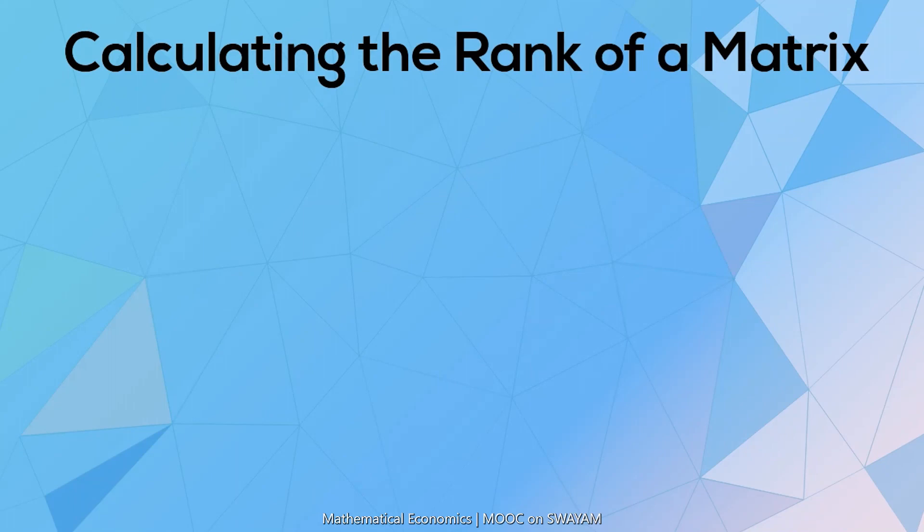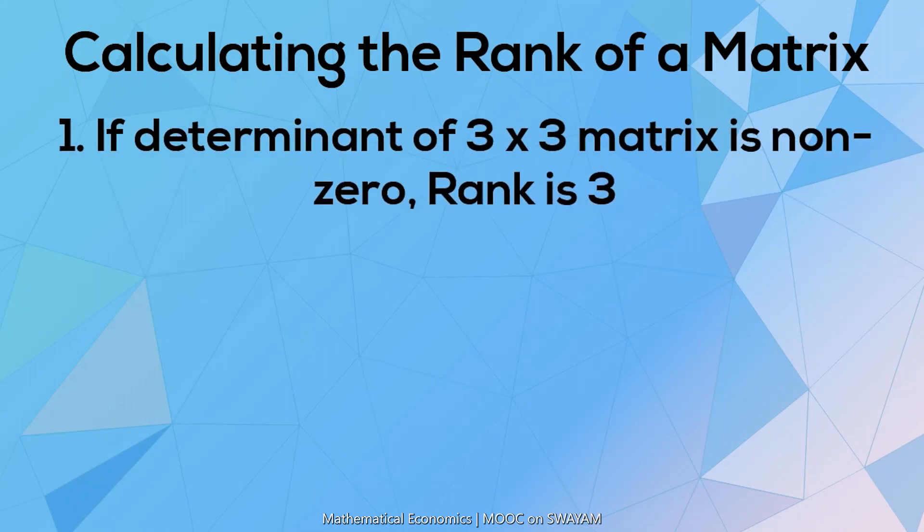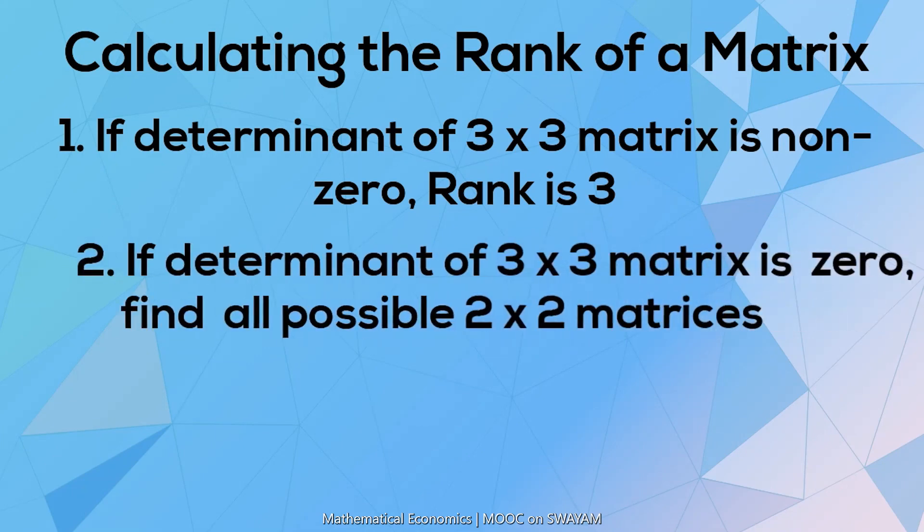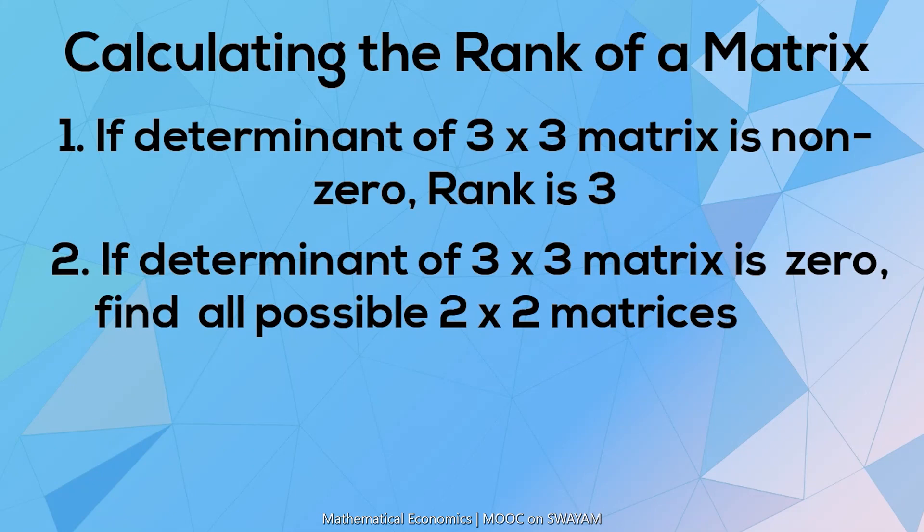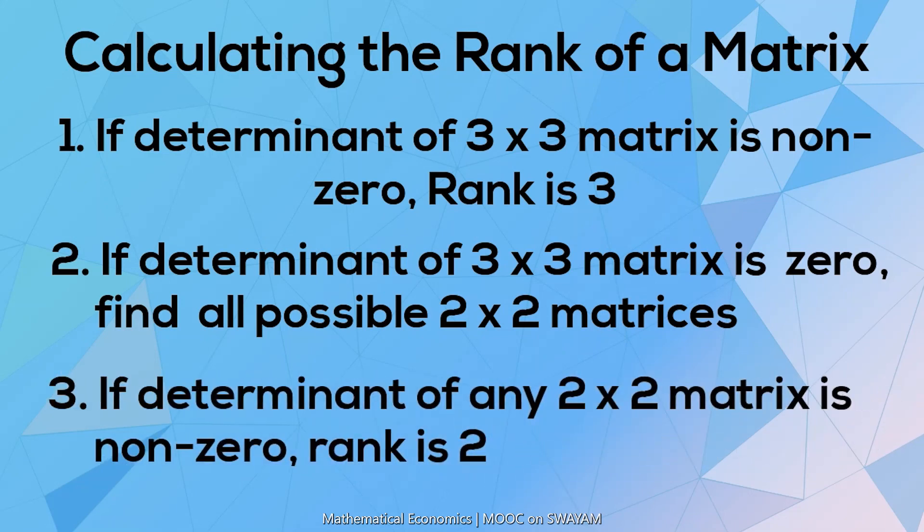If a 3 by 3 matrix has a non-zero determinant, the rank is 3. But if the determinant of a 3 by 3 matrix is 0, we find all the possible 2 by 2 matrices and if the determinant of any 2 by 2 matrix is non-zero, the rank of the matrix is 2.